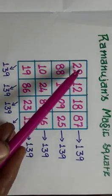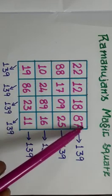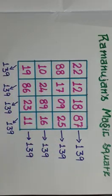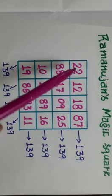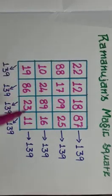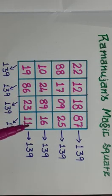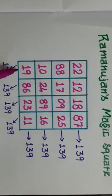Not only that. When we add diagonals also, we will be getting 139. And when we add corners of 4 sides, also you will be getting 22 plus 87 plus 19 plus 11. You will be getting 139.